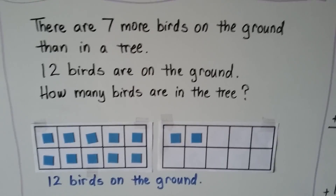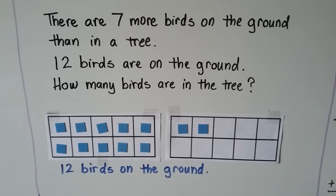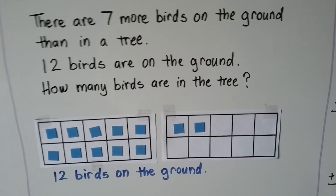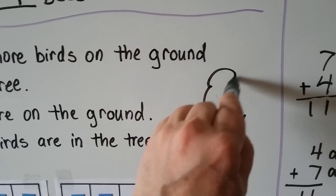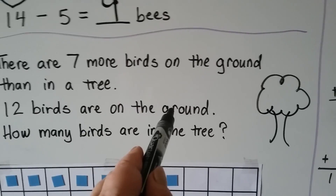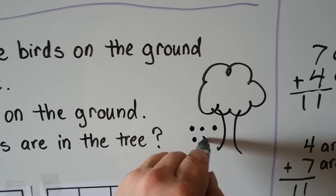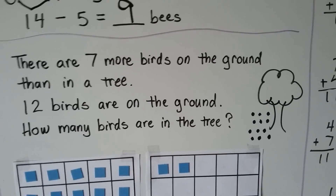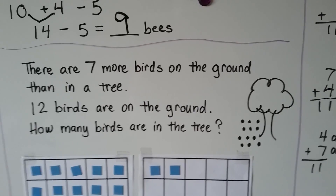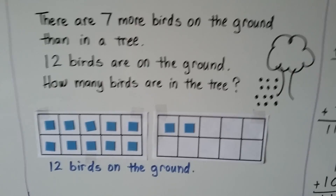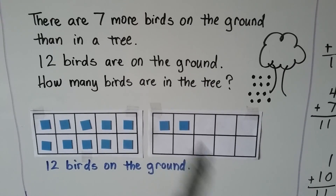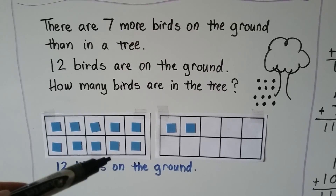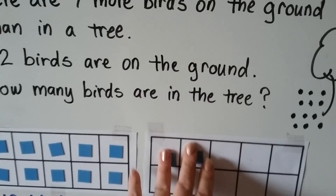See if we can do this tricky one. There are 7 more birds on the ground than in the tree. 12 birds are on the ground. How many birds are in the tree? We need to find how many birds are in the tree. We can even do a drawing to help us act it out — we could draw a tree. It says there are 12 birds on the ground, so we make 12 dots and say those are the ones on the ground. There are 7 more birds on the ground than in the tree, so there's less in the tree. We can use 12 counters representing the birds on the ground, and if there are 7 more on the ground than in the tree, we take 7 counters away, and that tells us how many are in the tree.